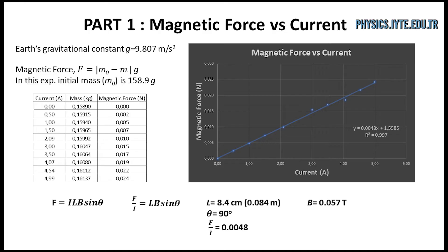An additional note is that the units of the balance measurements are in grams, so unit conversion is done by multiplying the mass in kilograms by Earth's gravitational acceleration, and the converted values are used in the graphs during the experiment.